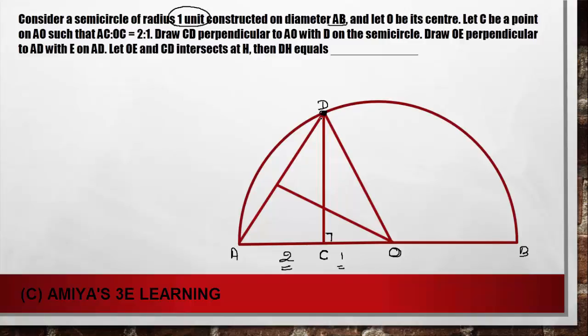Then according to the question I joined AD. And OE is perpendicular to AD. And the point of intersection of OE and CD intersect at H. And we have to find the length of DH. This is a quite simple question.